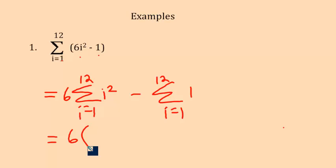And then I am going to use my shortcut formula. For i squared, the pattern was n, which is twelve, the top number, times n plus one, times two n plus one. That's two times twelve is twenty-four plus one is twenty-five, all over six. Minus the second summation is the summation of a constant. So it's just the constant times the number of terms, which will be twelve.